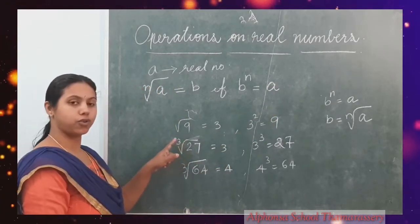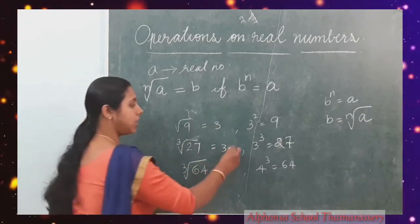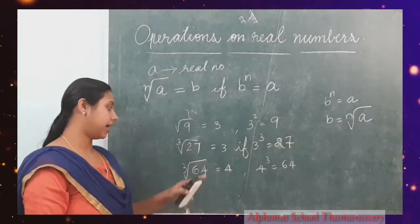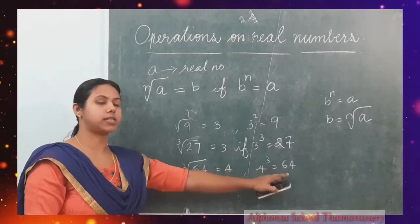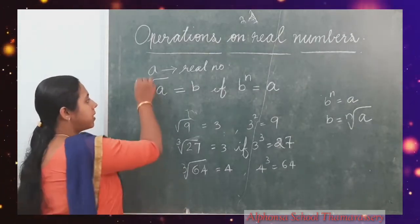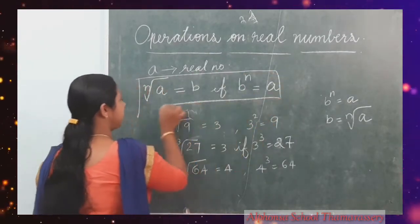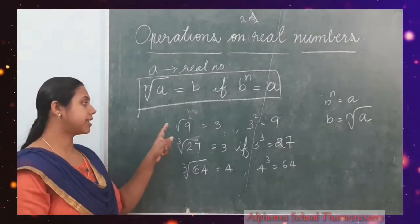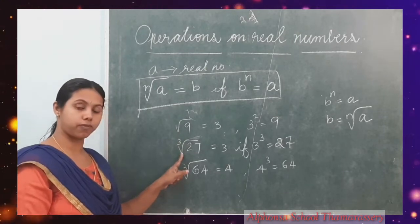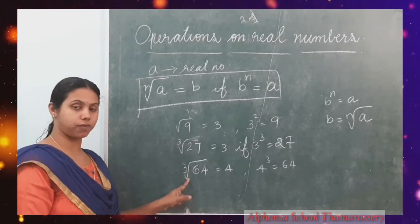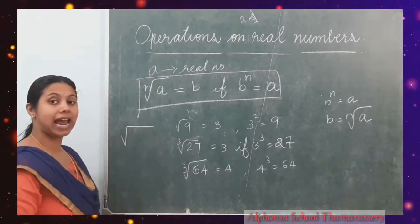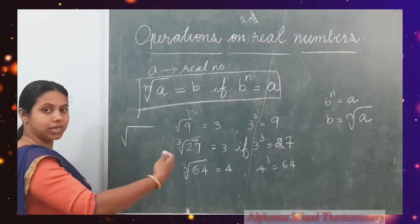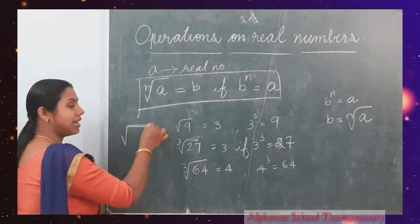So we can conclude: for a real number A, the nth root of A is equal to B if B raised to n is equal to A. For example, cube root of 27 equals 3 if 3 cube equals 27; square root of 9 equals 3 if 3 square equals 9; cube root of 64 equals 4 if 4 raised to 3 equals 64. Remember: nth root of A equals B if B raised to n equals A. The sign used is called the radical sign.